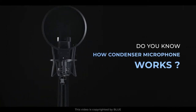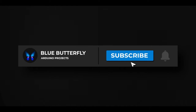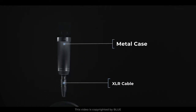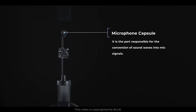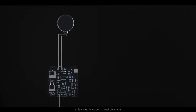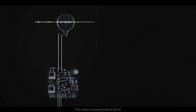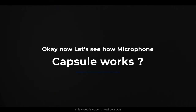Do you know how a condenser microphone works? First, let's see what is inside a microphone. It has a metal casing and XLR cable for audio output, a microphone capsule responsible for the conversion of sound waves into mic signals, and a microphone circuit used to amplify the signals from the capsule and process the audio to make it clean and loud. When sound waves pass through the capsule, they generate an electrical signal which is then amplified and cleaned by the circuit. The audio signal is then transferred to an amplifier through the XLR cable.